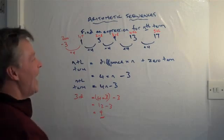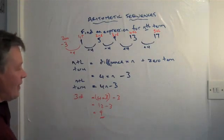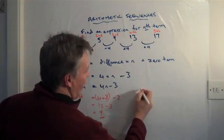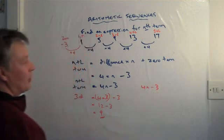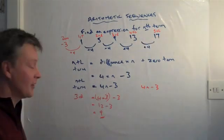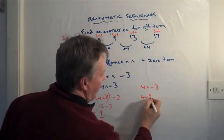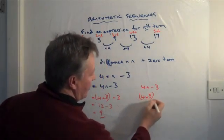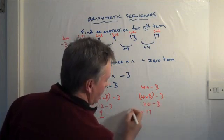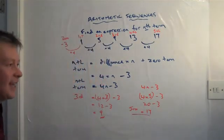And just for confirmation, the fifth term is 17. Using the same formula, 4n minus 3, the fifth term will be 4 times 5, which is the value of n, minus 3, which is 20 minus 3, which equals 17. So the fifth term equals 17.